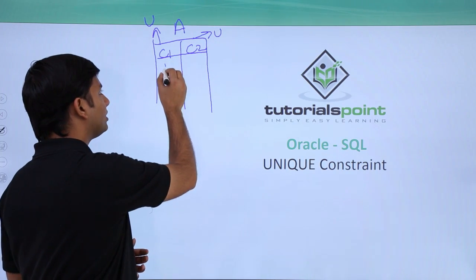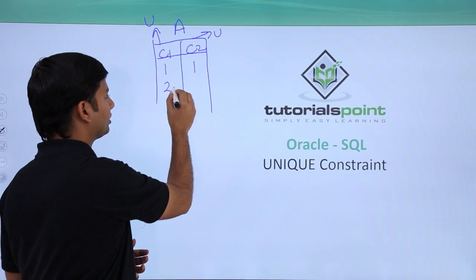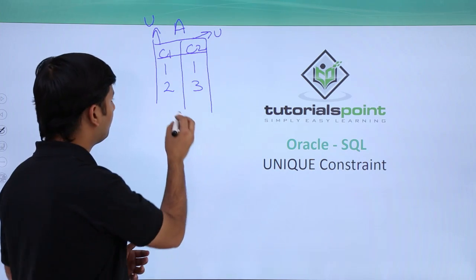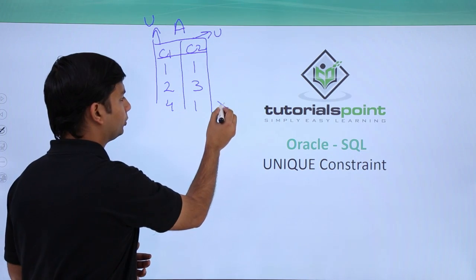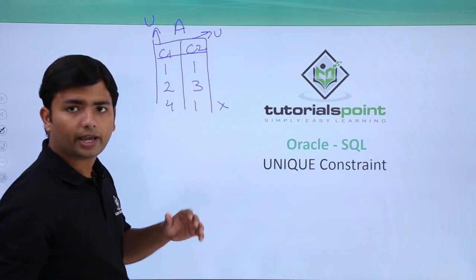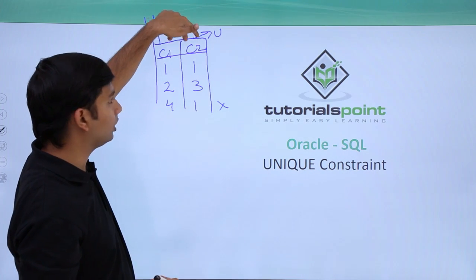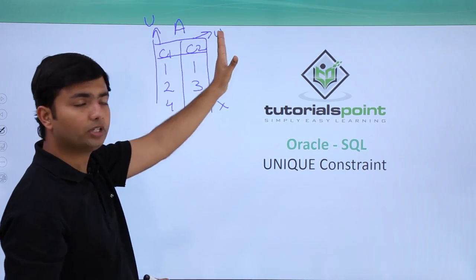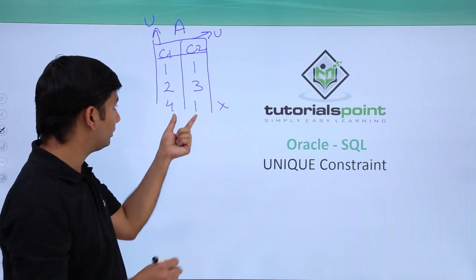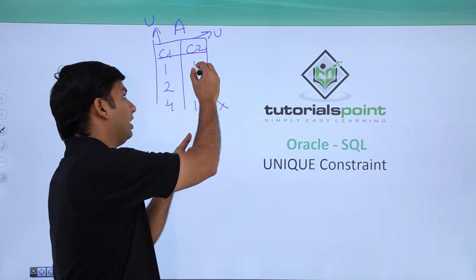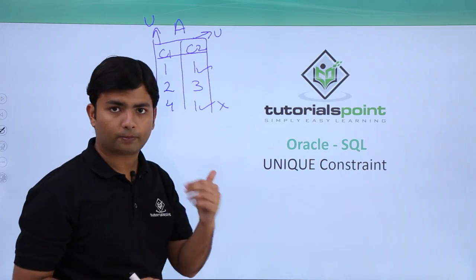If you enter (1, 1) it is unique; (2, 3) is again unique. But if you enter (4, 1), this will give an error. Because the column is decorated with the unique constraint, it will not allow a duplicate value — since 1 is already present in that column, you cannot enter 1 again.